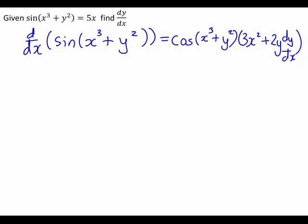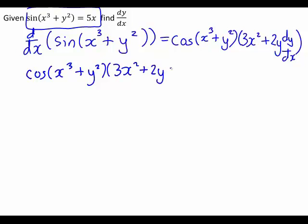So we've found the derivative with respect to x of the left-hand side. To find dy/dx for the whole expression, we differentiate both sides of the equation. The derivative of sin(x³ + y²) with respect to x is cos(x³ + y²) times (3x² + 2y dy/dx), and that must equal the derivative with respect to x of 5x, which is just 5.